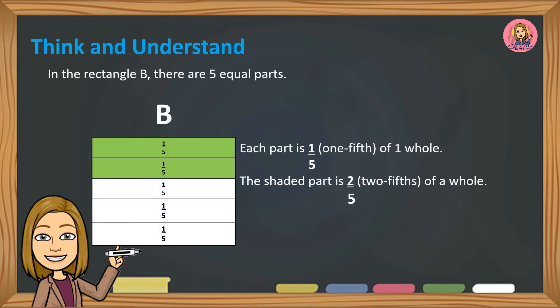In rectangle B, there are five equal parts. Each part is one fifth of one whole. The shaded part is two fifths of a whole.